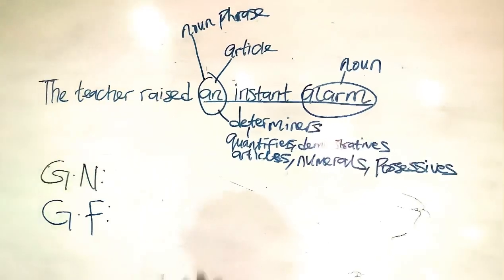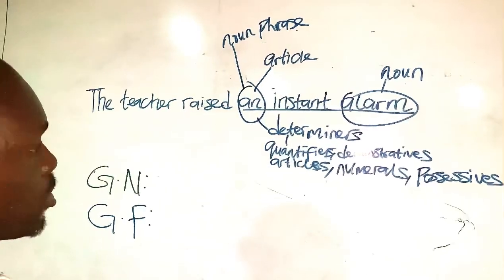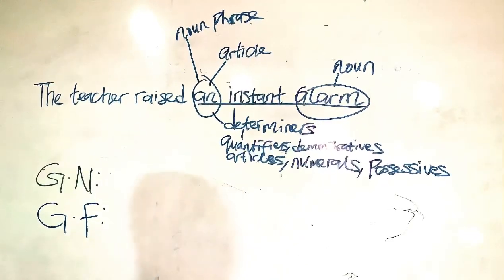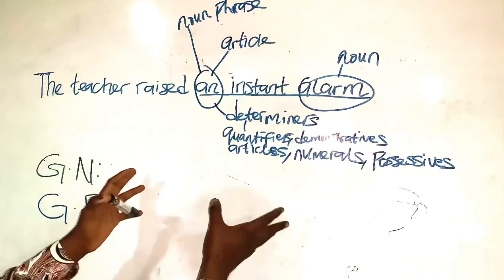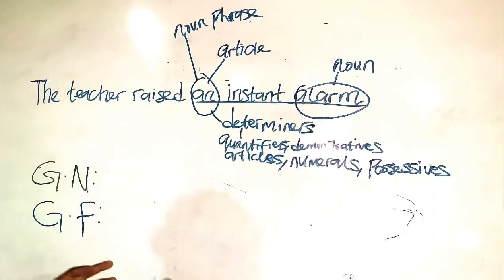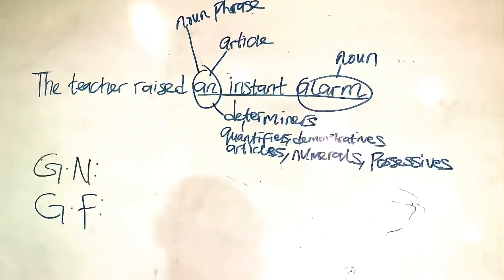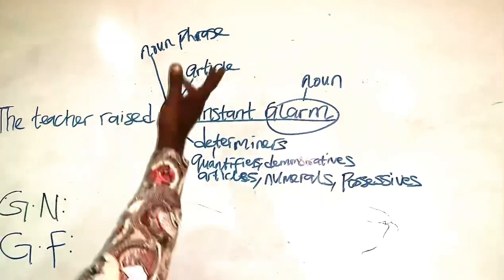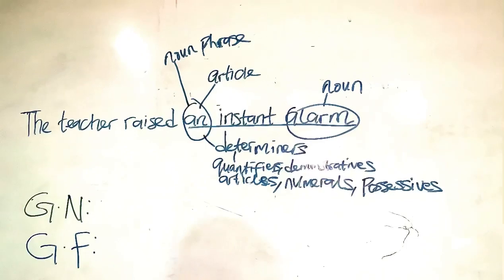Most noun phrases come with determinants. That doesn't mean we don't have other noun phrases that do not have determinants. Yes, we definitely have, but like 95% of noun phrases, the frequently used ones, are the ones that come with determinants.